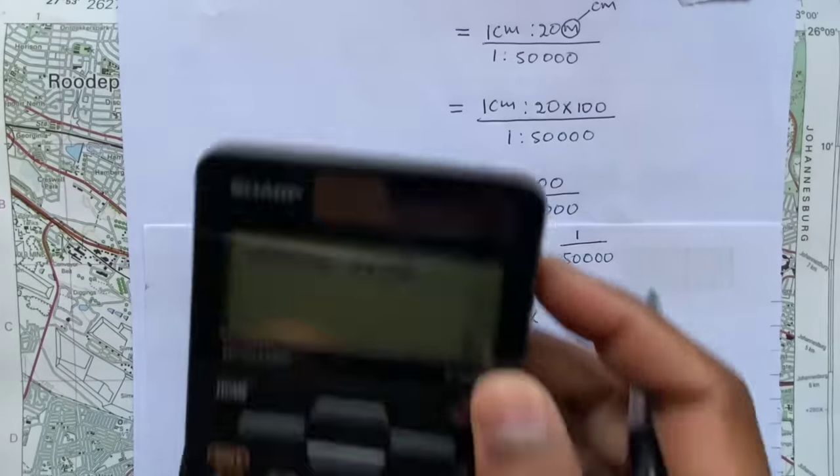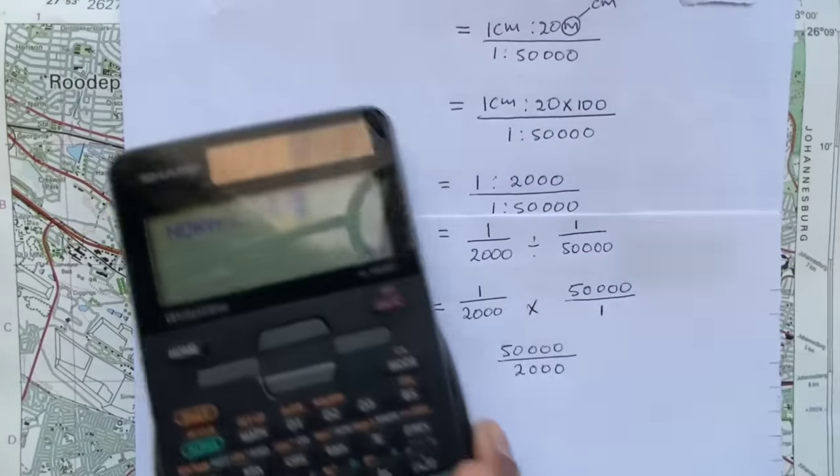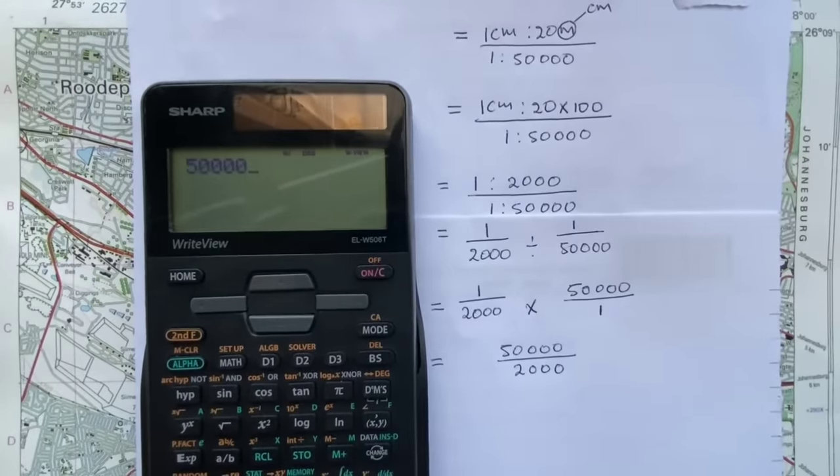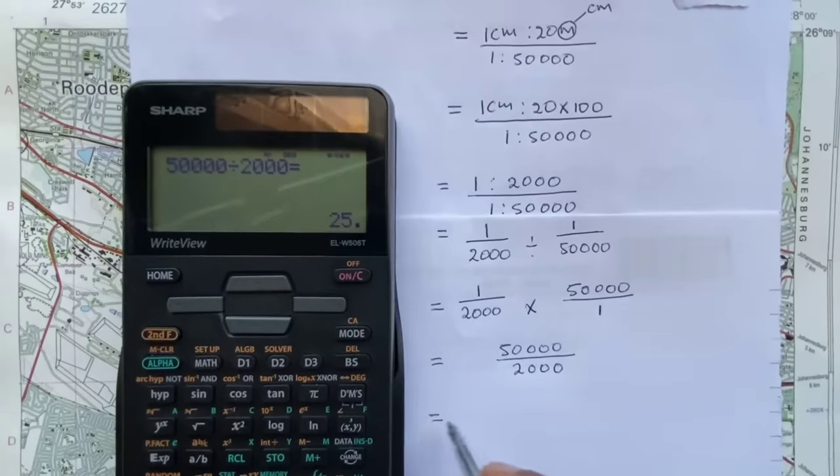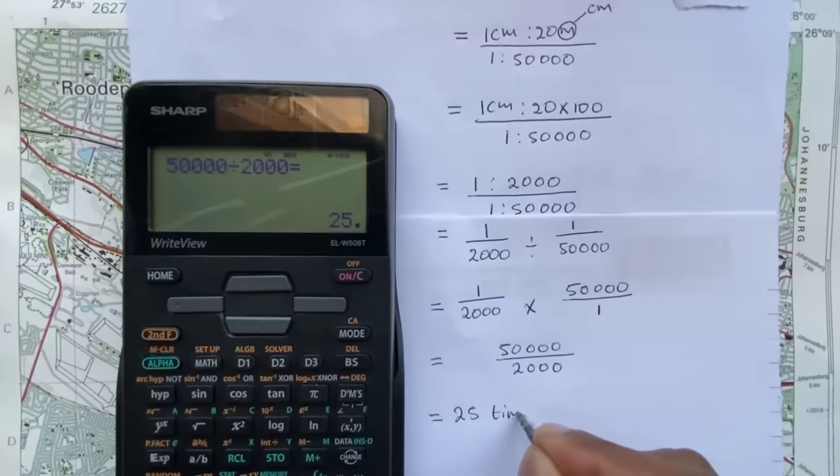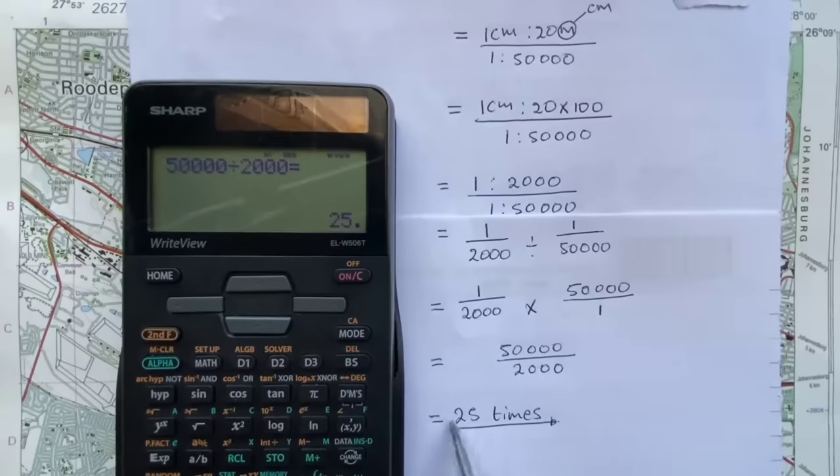And if I punch this on my calculator to get the final answer, I would say 50,000 divided by 2,000, that will give me 25. So my answer is 25 times.